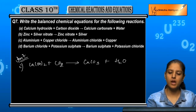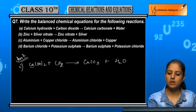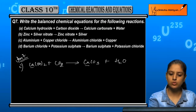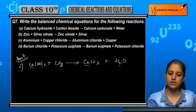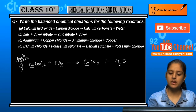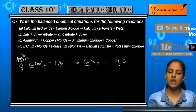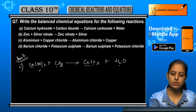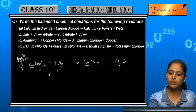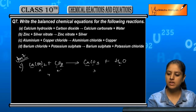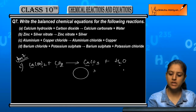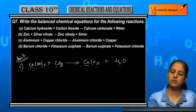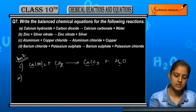Ca is 1 on each side. OH₂ means H₂ — 2 hydrogens on each side. Carbon is 1 on each side. Oxygen: we have 2 plus 2 giving total 4 on the left, and 3 plus 1 giving total 4 on the right. So this is already a balanced chemical equation.